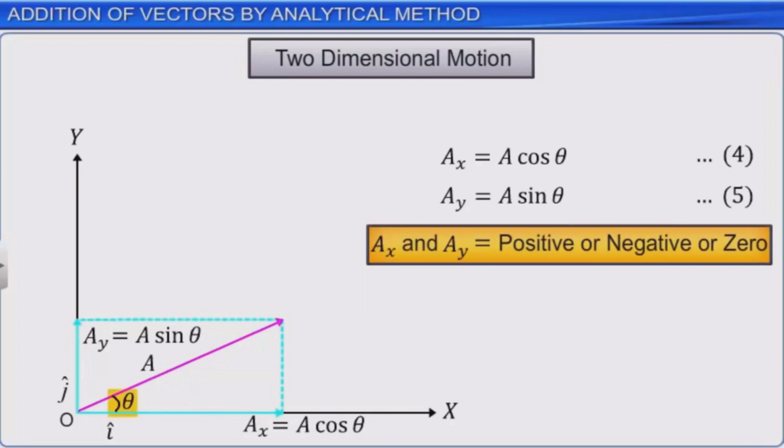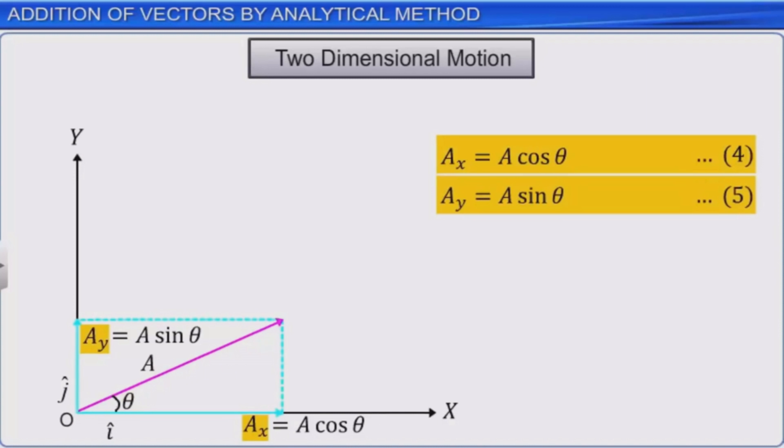A can be specified by its magnitude and theta or its two components Ax and Ay. When A and theta are given, Ax and Ay can be determined using equations four and five. When Ax and Ay are given, you can find A and theta as shown here.